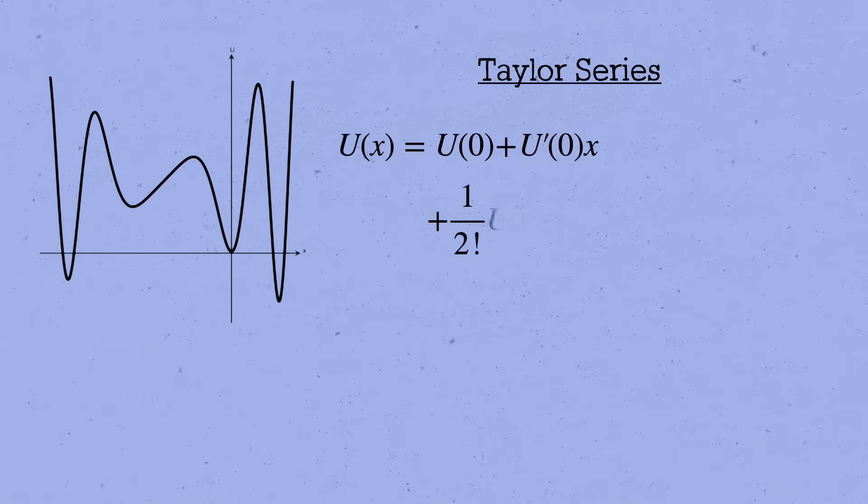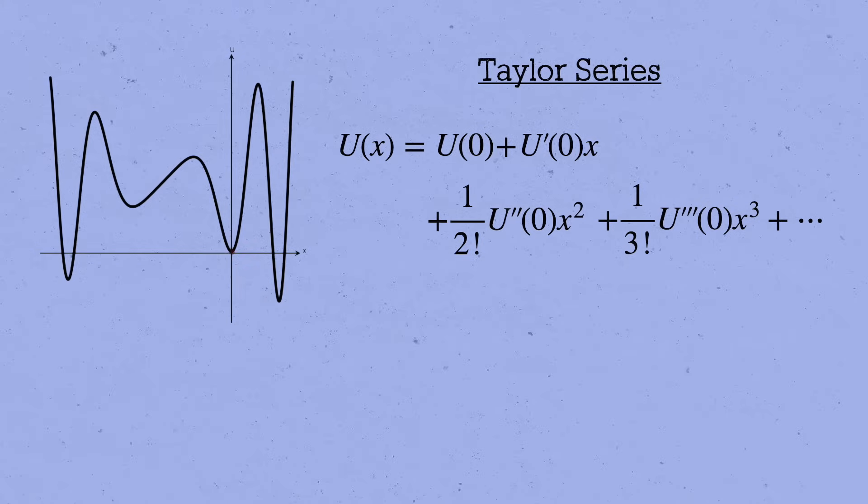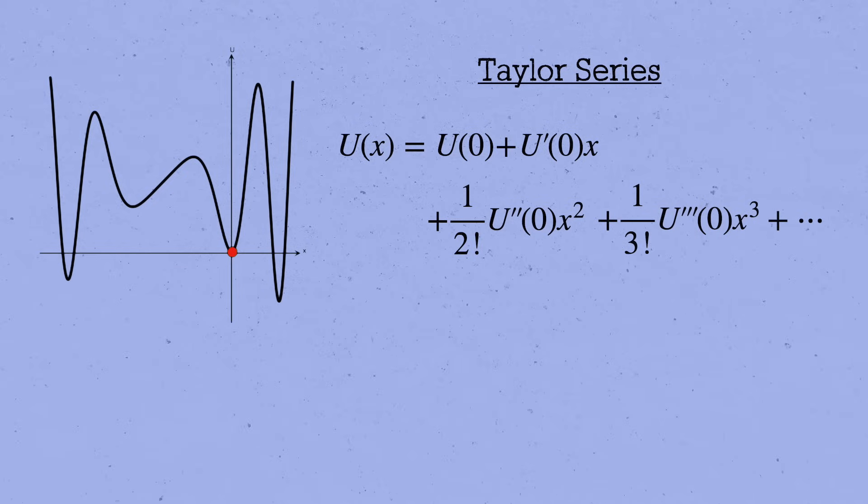And this isn't some rough qualitative analogy. We can make it mathematically precise. We can expand any potential u in powers of x around a stable equilibrium point using a Taylor series, like you might have learned about in your math classes. Here's what's going on in this formula. First of all, if you're sitting right at x equals zero, then when you evaluate the potential, you're obviously going to get u.